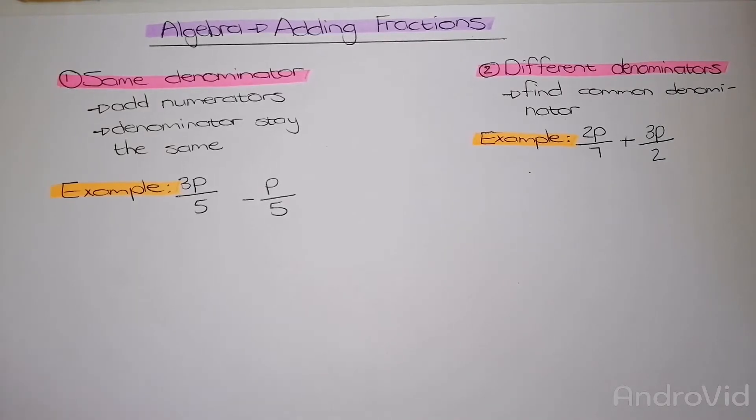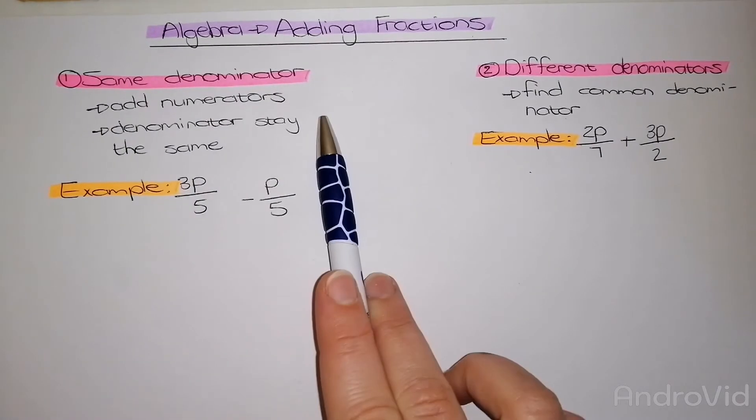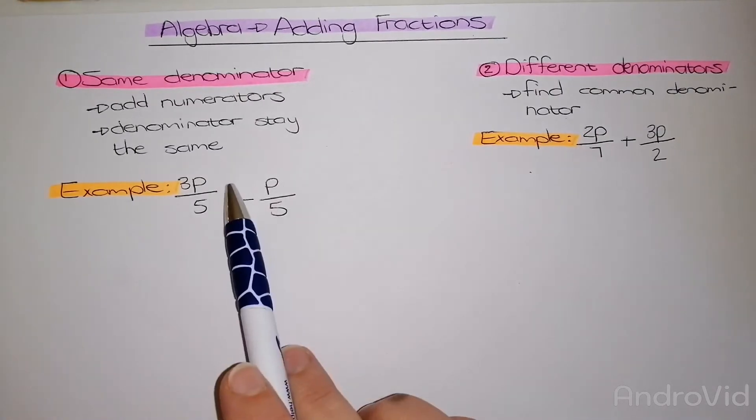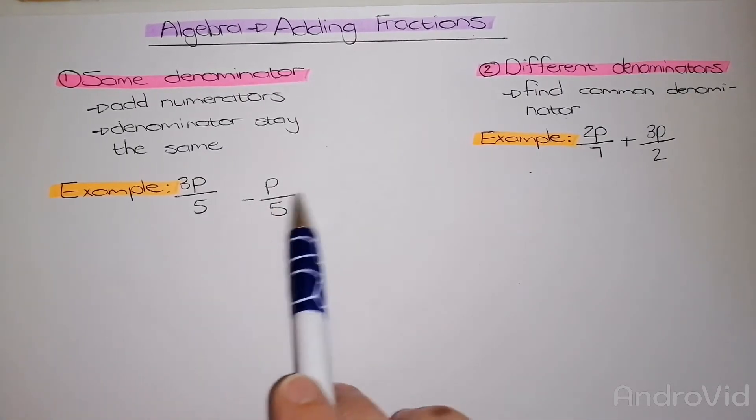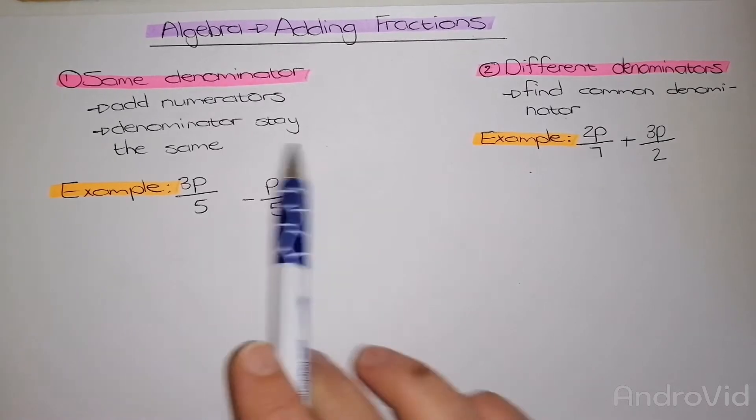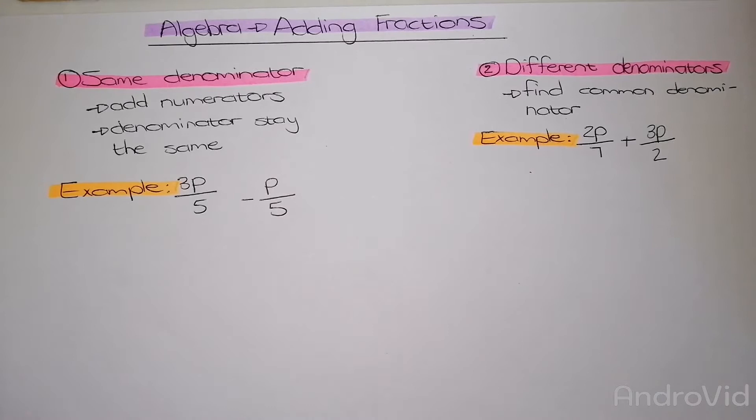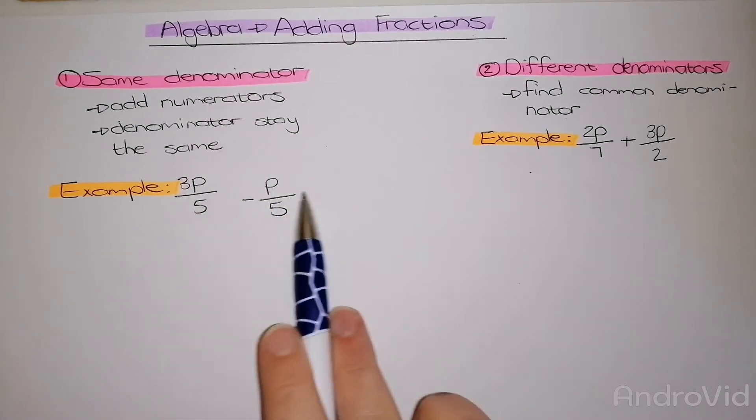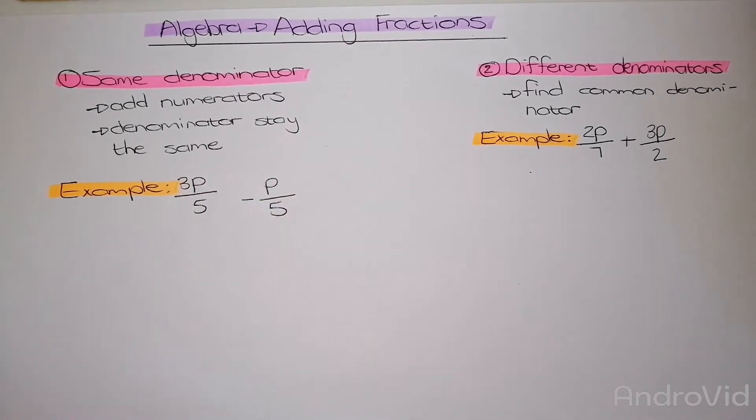When adding and subtracting fractions, it's really important to look at the denominator. That is the deciding factor on what to do. So if we have the same denominator, the denominator is the number that is underneath the fraction line. When we have the same denominator, like in this example, the denominator stays exactly the same, and all we do is add the numerator, which is the top part of the fraction.